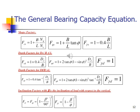And it is given: Fcs, Fqs, and Fgamma s is given. 1 plus B by L Nq by Nc, like that. 1 plus B by L tan phi, and Fgamma s is 1 minus 0.4 into B by L. This is for rectangular equation. And these things are within limitations which are given here.